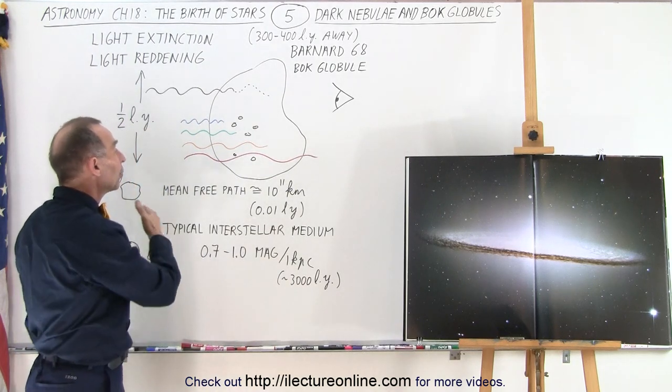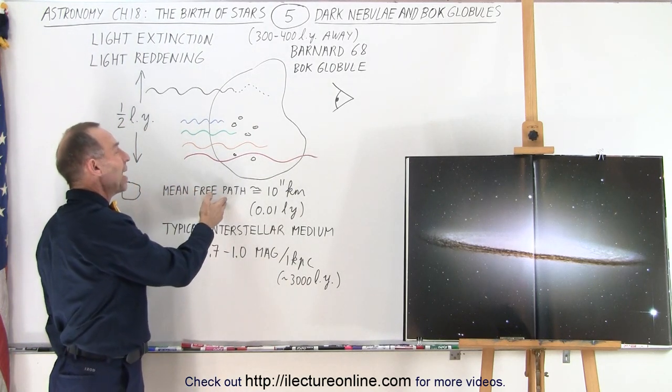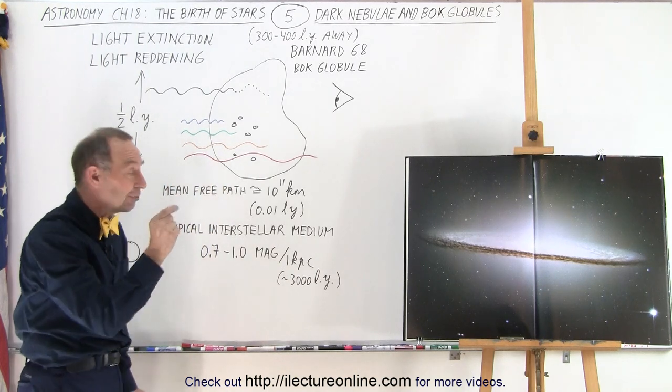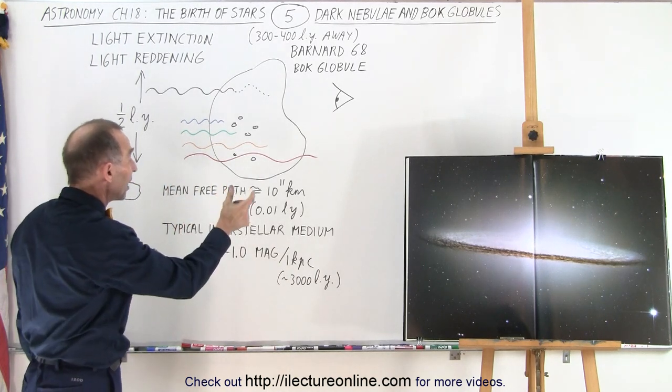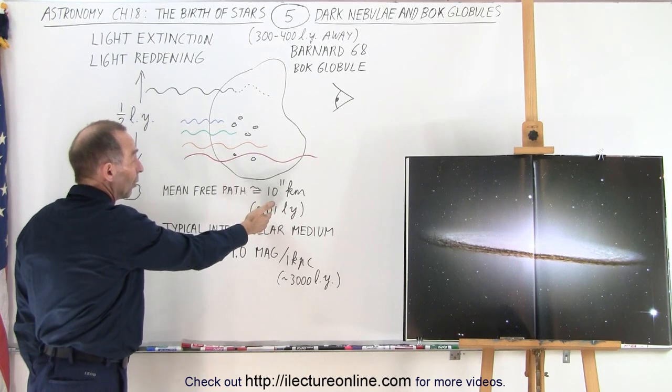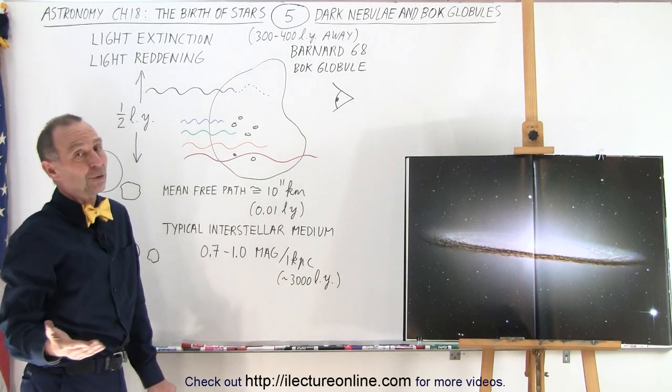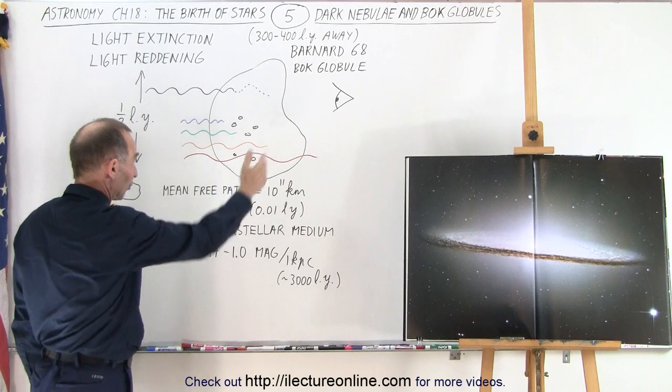Sometimes we talk about the light going through a nebula in terms of the mean free path: how far a photon can travel before it's scattered out. In the typical case it might be as much as a hundredth of a light year, which is of course not nearly far enough to make it through.